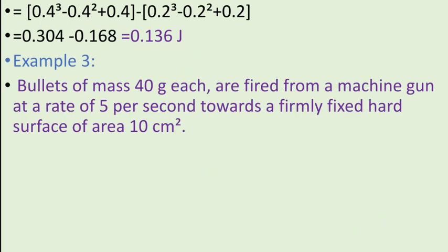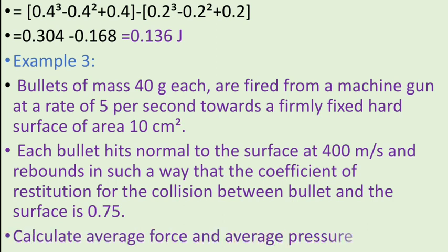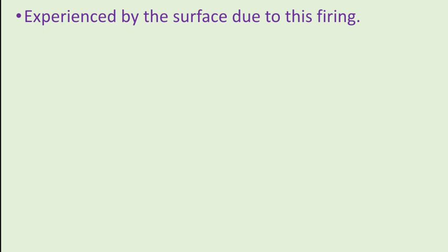Example 3. Bullets of mass 40 grams each are fired from a machine gun at a rate of 5 per second towards a firmly fixed hard surface of area 10 square centimeter. Each bullet hits normal to the surface at 400 meter per second and rebounds in such a way that the coefficient of restitution for the collision between bullet and the surface is 0.75. Calculate the average force and average pressure experienced by the surface due to the firing.